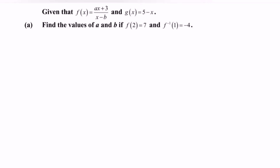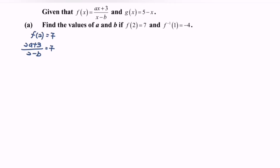And f inverse of 1 is equals to negative 4. So now kindly make use of the information: f(2) = 7. Substitute the value of 2 into the function f(x), so we will have (2a + 3) / (2 - b) = 7. Cross multiply the (2 - b).